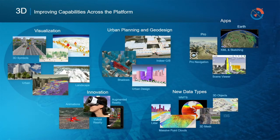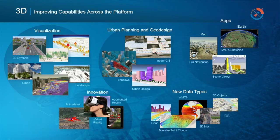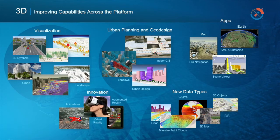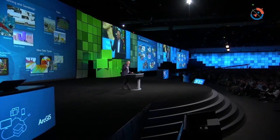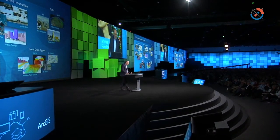The apps continue to advance: for navigation in Pro, for visualization in Earth, and the new scene viewer with 2D and 3D visualization is very powerful. We've added new data types — now supporting 3D objects and 3D meshes with the I3S specification. In the innovation area, some fun additions like augmented reality, virtual reality opening up new visions of GIS data to new audiences, and new tools in animation.